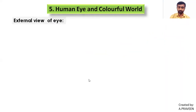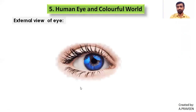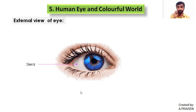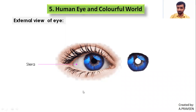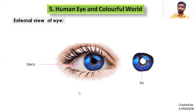In today's class, we are discussing the structure of the eye. Before going to the internal structure, what are the external parts of the eye? The white colored part we can see in our eye is called the sclera. The colorful part visible is called the iris. And the dark black spot inside the iris is called the pupil. These are the parts we are able to see externally.